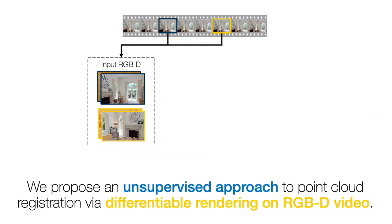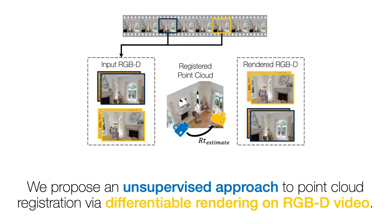We propose an unsupervised approach that registers and renders the scene, and learns using the photometric consistency between the input and rendered frames. Our approach follows the standard pipeline, but only uses differentiable components for each stage. This allows us to train the model end-to-end from scratch without any supervision.